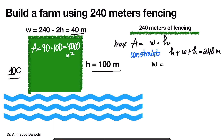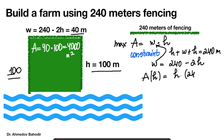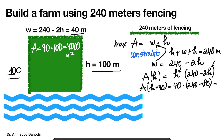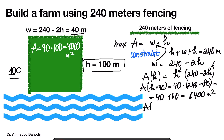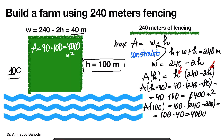We are going to find the width from this equation, which gives width equals 240 minus 2h, and substitute this into the area formula. So now A depends only on h and equals h times (240 minus 2h). For example, if h equals 40, we get 40 times (240 minus 80), which is 40 times 160, equal to 6400 square meters. If h equals 100, we get 100 times (240 minus 200), which is 100 times 40, equal to 4000 square meters.